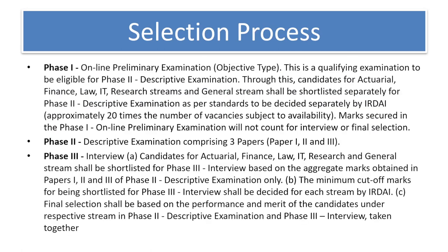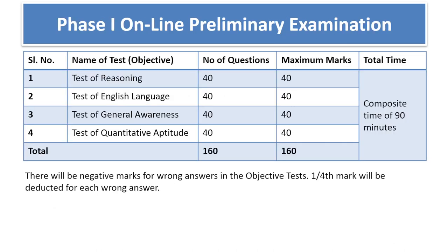There are three phases for selection: Phase 1, Phase 2 and Phase 3. In Phase 1, there is test of reasoning, English, general awareness and quantitative aptitude — 40 questions each, 160 marks total, composed of 90 minutes. There will be negative marking of one-fourth. It is an objective type paper.